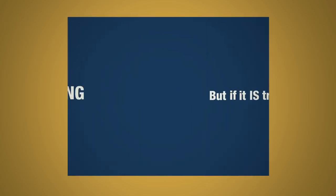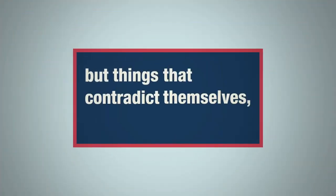But if it is true for everyone, then the claim is wrong, because it's only claiming to be true for me and not for you. Get it? Okay, maybe it's not clear right this second, but things that contradict themselves, like this claim, cannot be true.